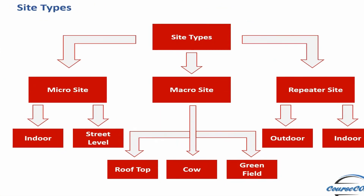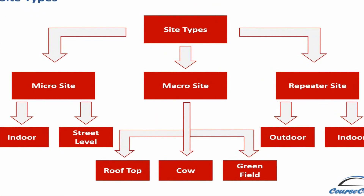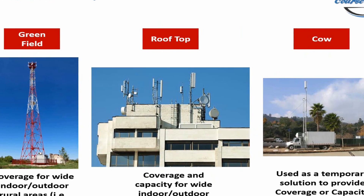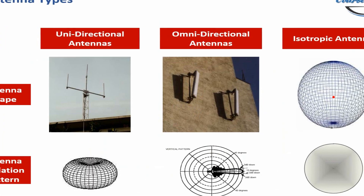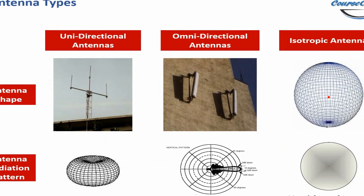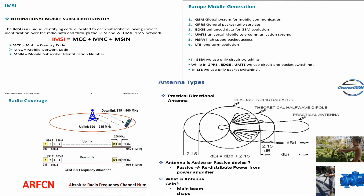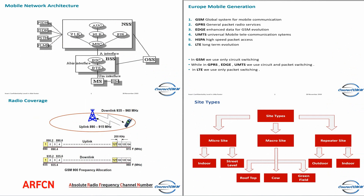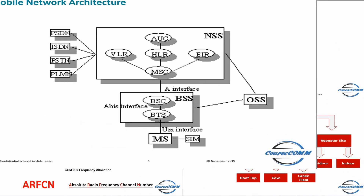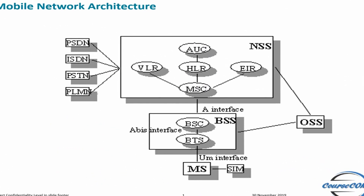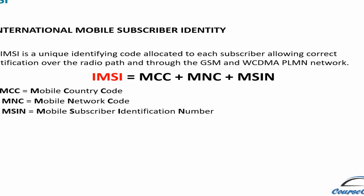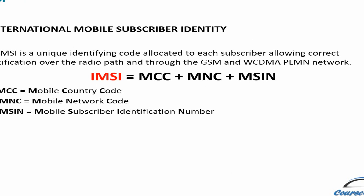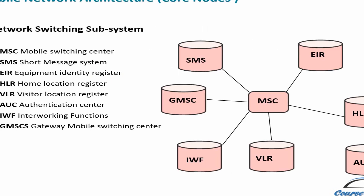The seventh chapter includes quick info with a practical part about site and antenna types. The eighth chapter is a large and detailed chapter explaining each part and each function of the GSM network nodes.